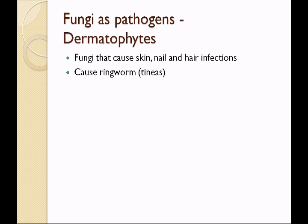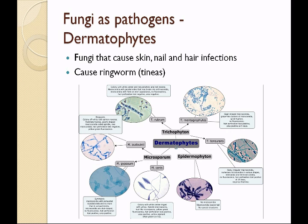Fungi grow in a circular pattern. When they do this in the skin, they tend to cause the skin to wrinkle up in the middle and it looks like there's a worm in there — that's where the name ringworm came from. The clinical term we use is tinea. The usual suspects causing dermatophytic infections are Trichophyton, Epidermophyton, and Microsporum. Candida albicans can also cause tineas. The microscopics look different, and this is the way we identify them under the microscope.